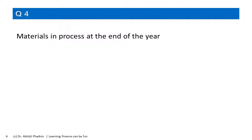Materials in process at the end of the year: you have brought raw materials, you are processing them, they are not yet finished, and they are a part of your own property — part of your inventory. That's your asset, and it should be a part of your balance sheet. In other words, your inventory is a part of your assets and belongs on the balance sheet.